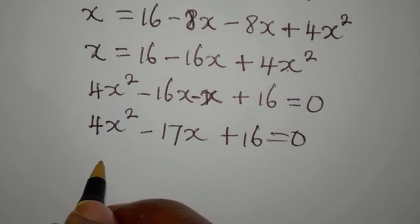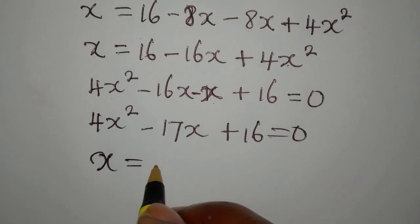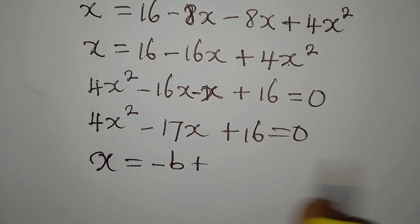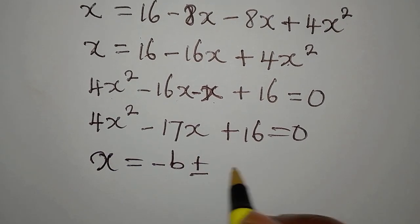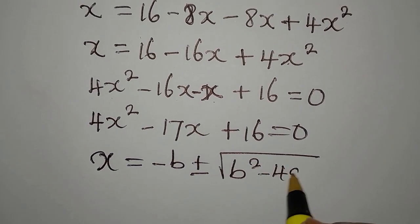And the formula is x equals minus b plus or minus the square root of b squared minus 4ac, divided by 2a.